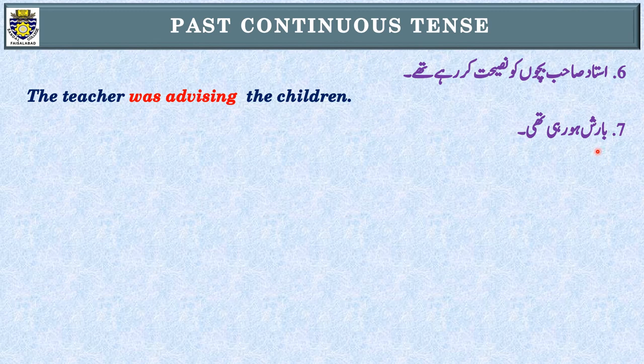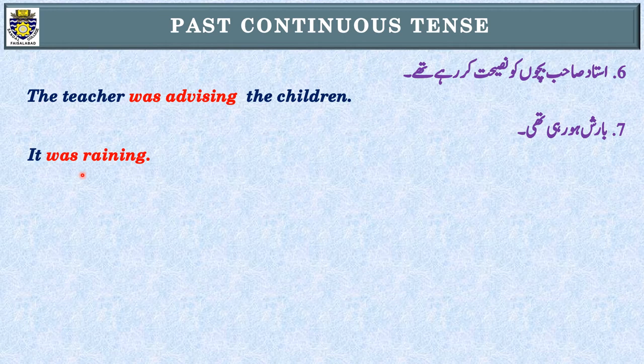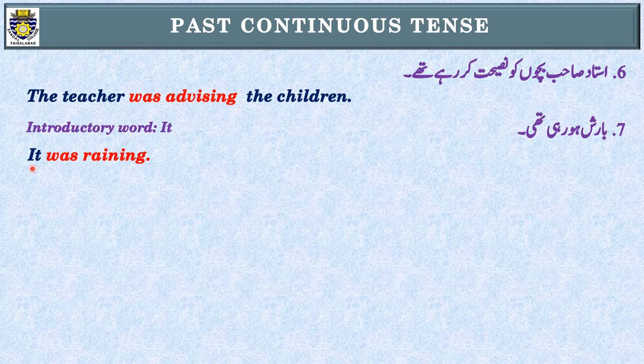Sentence number seven: بارش ہو رہی تھی۔ First step: 'رہی تھی' — Past Continuous Tense۔ Second step: subject — 'بارش'۔ جیسا کہ پچھلے lectures میں بتایا تھا، بارش، موسم، اور وقت کے لیے ہم 'it' use کرتے ہیں، تو یہاں: It was raining۔ Dear students, 'it' here is an introductory word — it کا یہاں کوئی اپنا meaning نہیں ہے، it actually introduces the action.